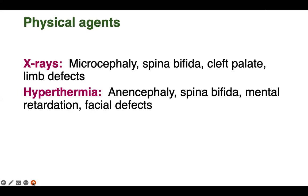Spina bifida means the end point of the spinal column where the spines are — fluid collection can occur there. Then cleft palate can occur, meaning the bony upper portion of the oral cavity — the palate — remains divided or cleft, which can also cause speech problems in the patient. Then limb defects can be seen, where the normal formation of upper and lower limbs does not occur.